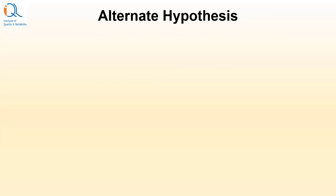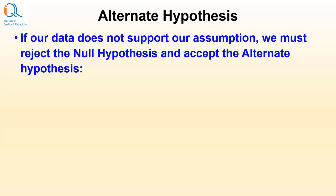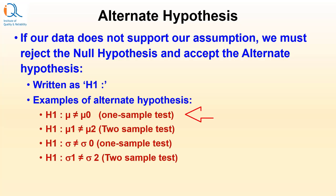After the null hypothesis, we also need to define the alternate hypothesis. If our data does not support our assumption, we must reject the null hypothesis and accept the alternate hypothesis. It is denoted as H1 colon. Examples of alternate hypothesis are: H1: mu ≠ mu0, which is for a one-sample test; and H1: mu1 ≠ mu2, which is for a two-sample test.